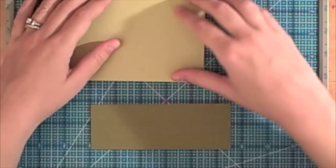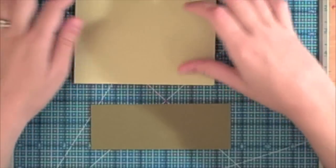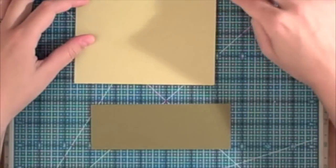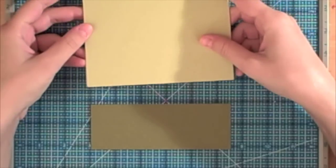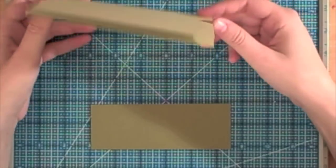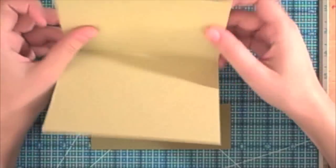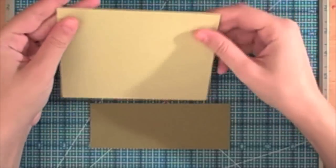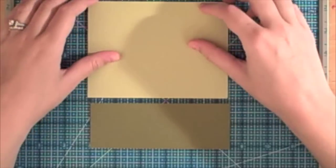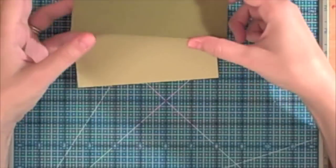This is a 5.5 by 4.25 card base and that is Spring Moss Paper Trey Ink cardstock. I really like this cardstock. It's super thick, really sturdy. You can see it just barely bends. When you make a card on it, it just seems sort of ritzier because it's so thick.